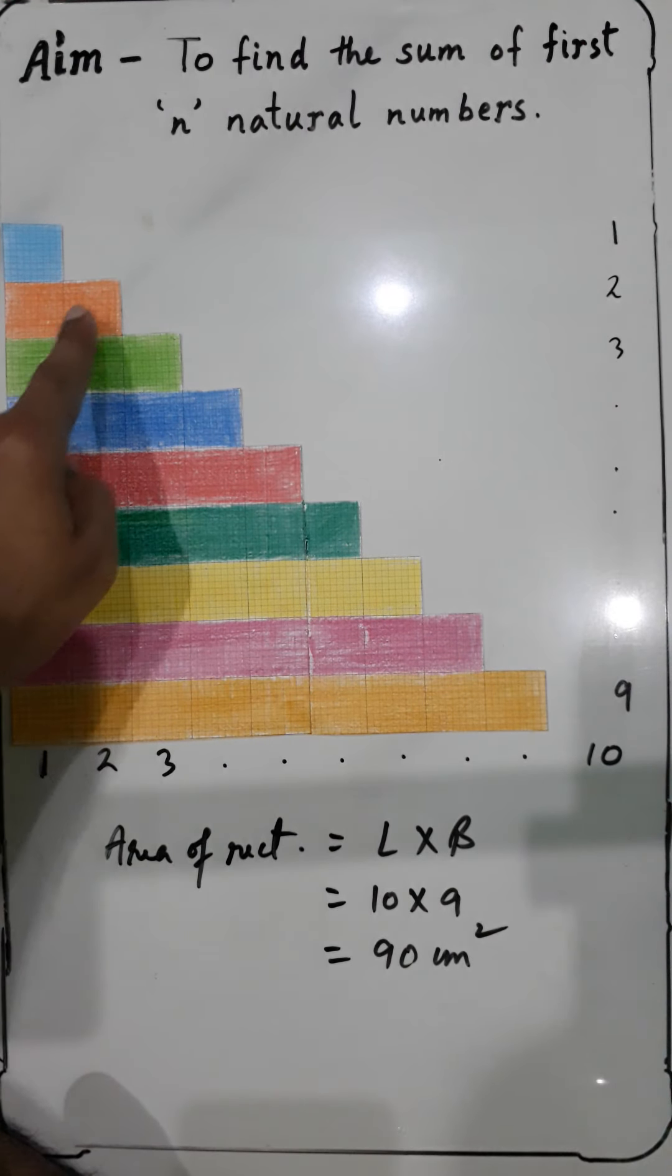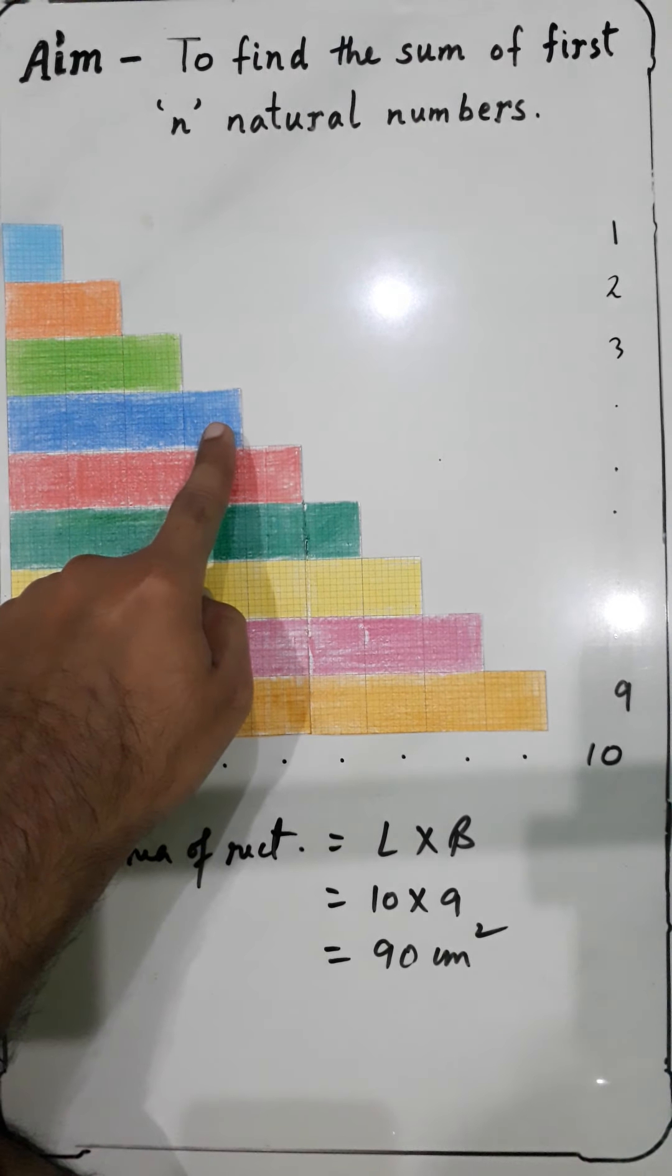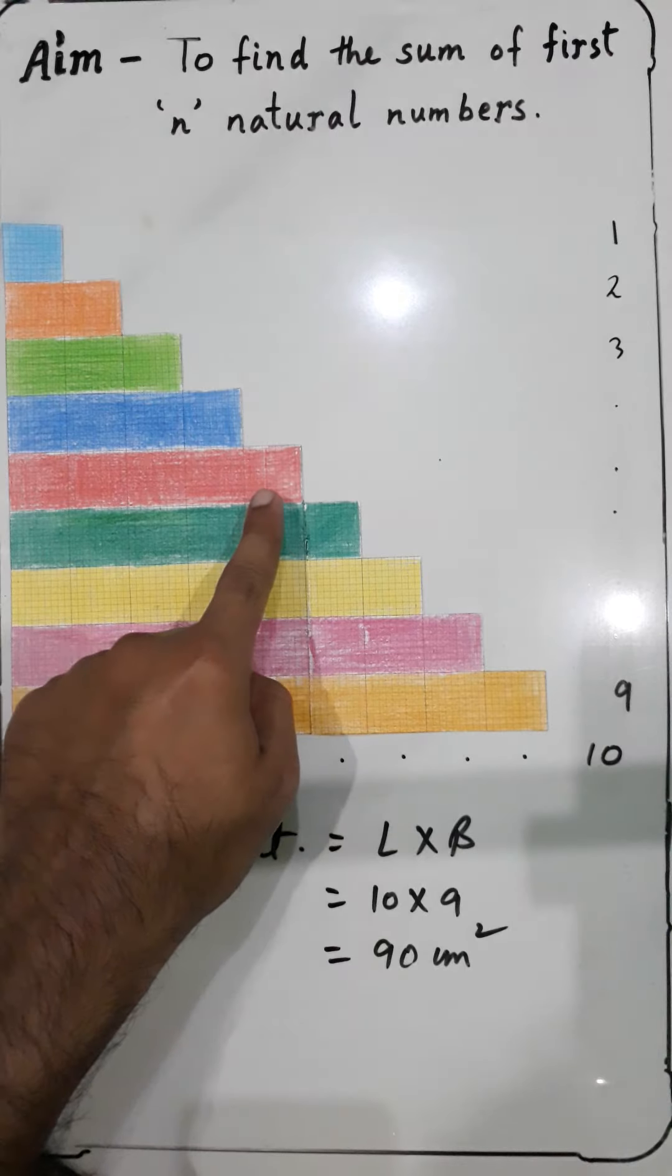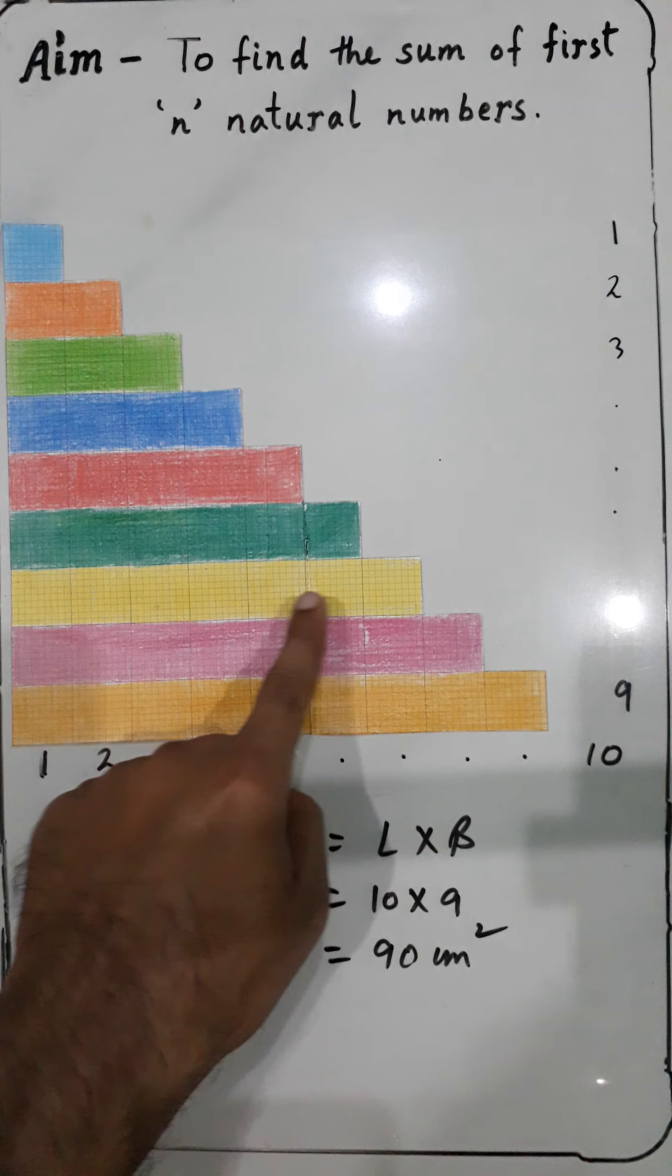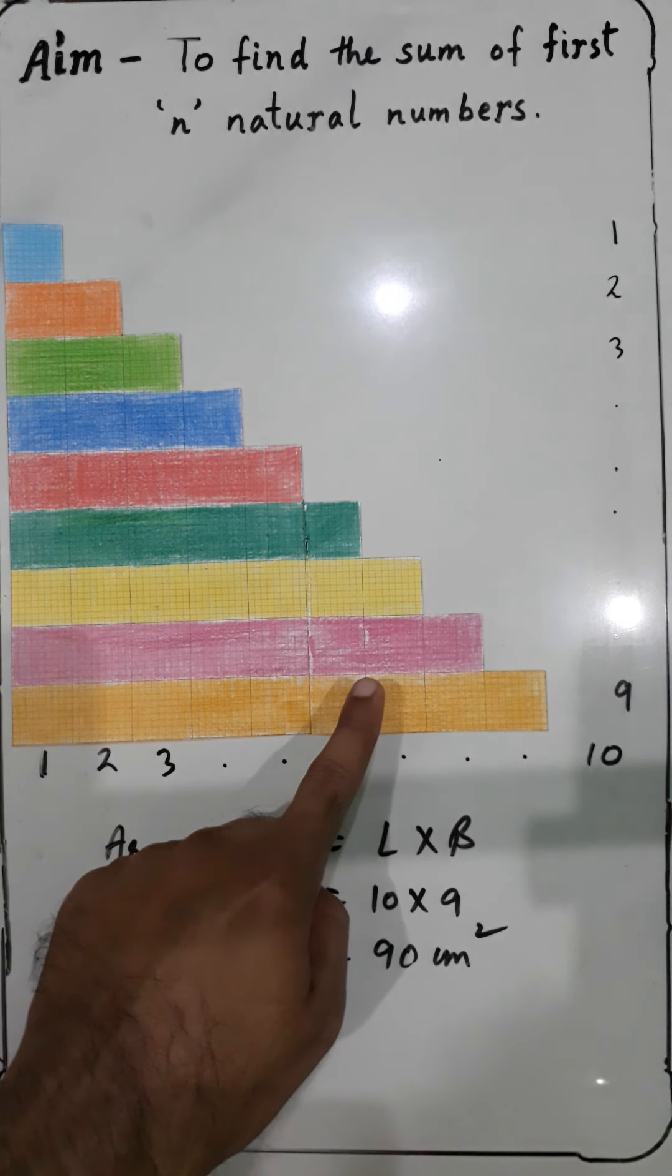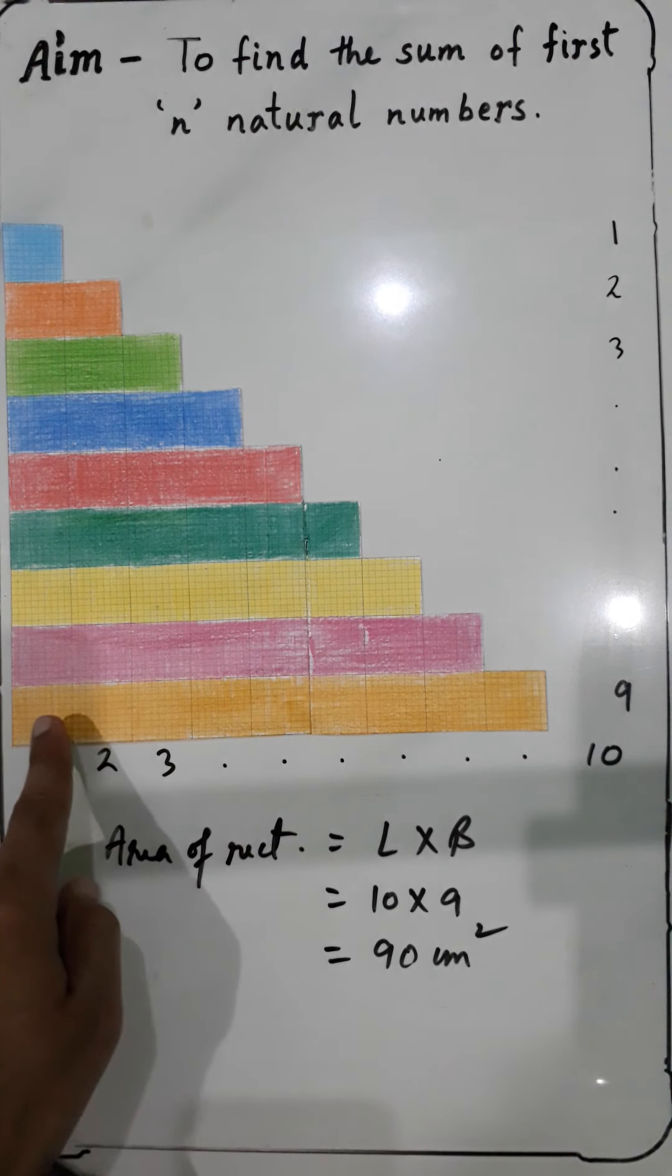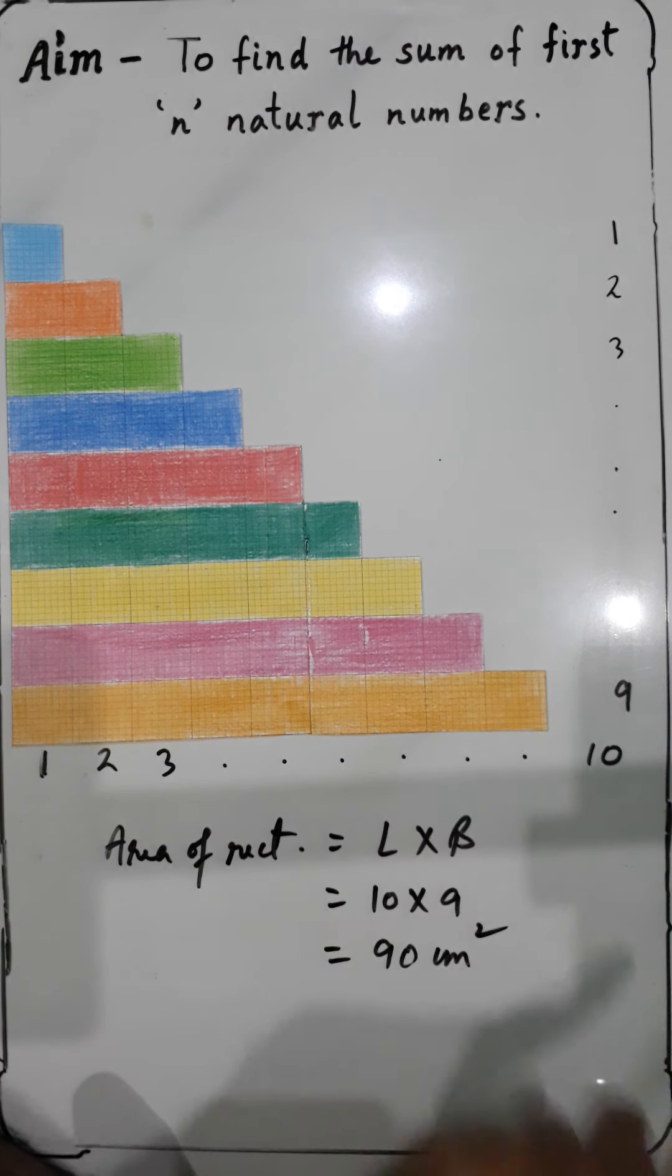Let's verify: 1 plus 2 is 3, 3 plus 3 is 6, 6 plus 4 is 10, 10 plus 5 is 15, 15 plus 6 is 21, 21 plus 7 is 28, 28 plus 8 is 36, and 36 plus 9 is 45.